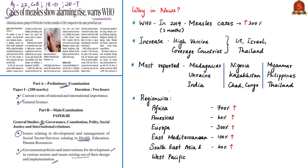The World Health Organization stated that preliminary global data reveals reported measles cases rose by 300% in the first three months of 2019 compared to the same period in 2018. The increase has also occurred in countries with high overall vaccination coverage, including the United States of America, Israel, Thailand, etc. The disease has spread fast among clusters of unvaccinated people. Countries with the most reported cases include Madagascar, Ukraine, India, Nigeria, Kazakhstan, Chad, Myanmar, Thailand, the Philippines, and the Democratic Republic of the Congo.